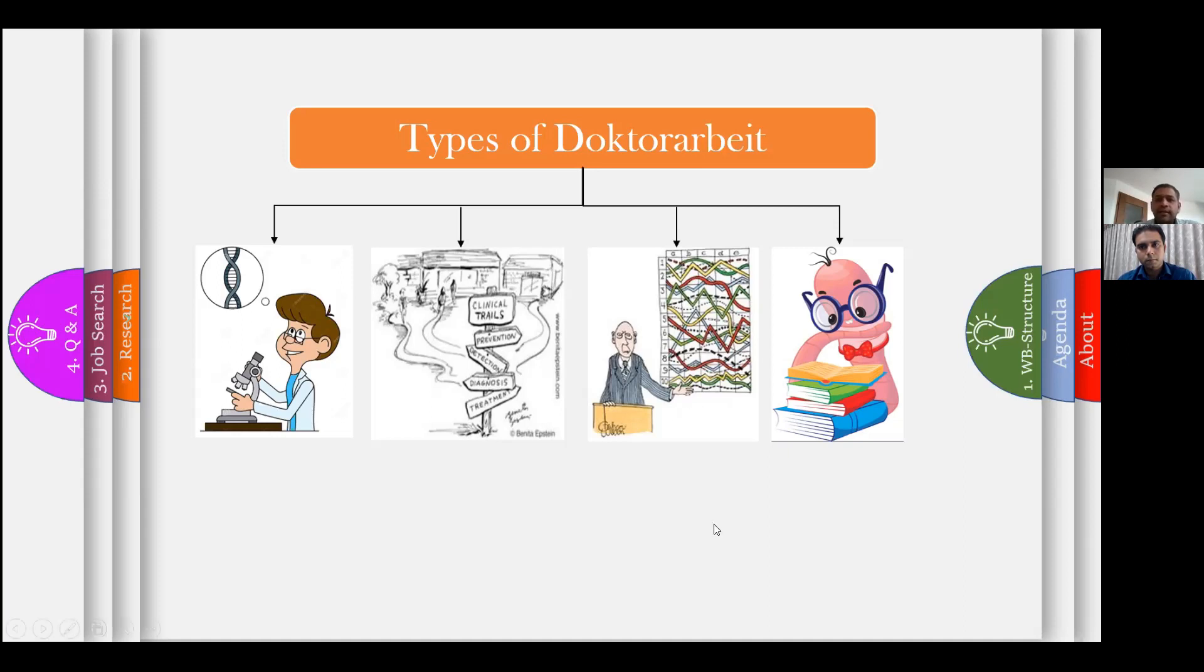The third is the statistical Doktorarbeit. The statistical Doktorarbeit is mainly done through statistics. For example, if you write a meta-analysis, you collect a few papers in one subject and you analyze their data together. The advantages - it can be done very fast.